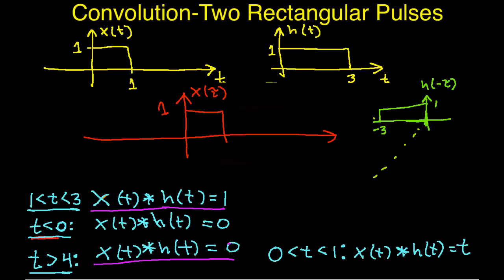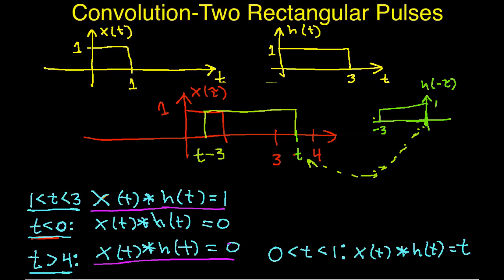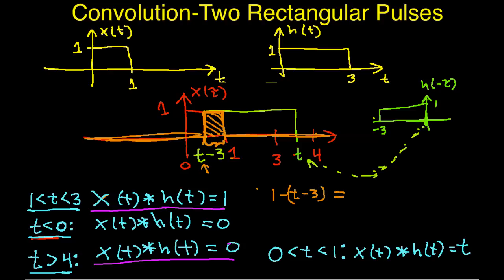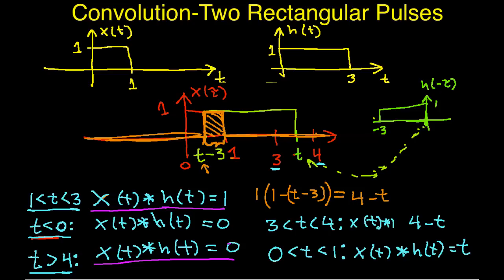The last case is when t is between 3 and 4. The left edge of h of t minus tau is at t minus 3. Since t is between 3 and 4, t minus 3 falls between 0 and 1. The product is non-zero only from t minus 3 to 1. The area has width 1 minus (t minus 3) and height 1, which simplifies to 4 minus t. So for t between 3 and 4, the convolution is 4 minus t.